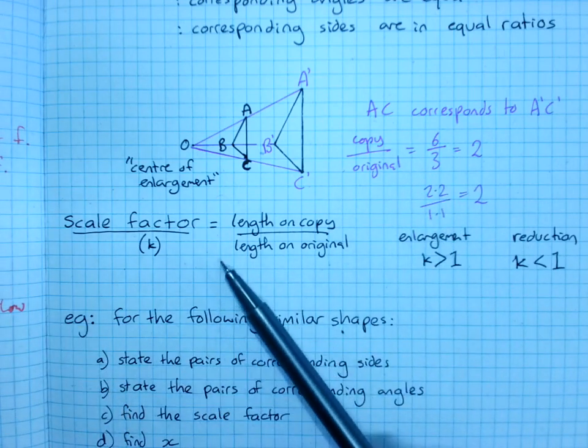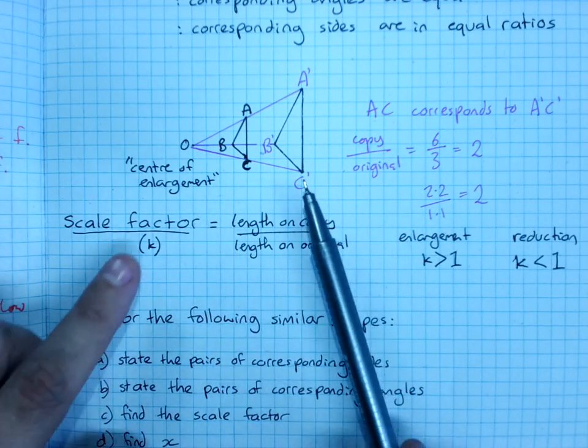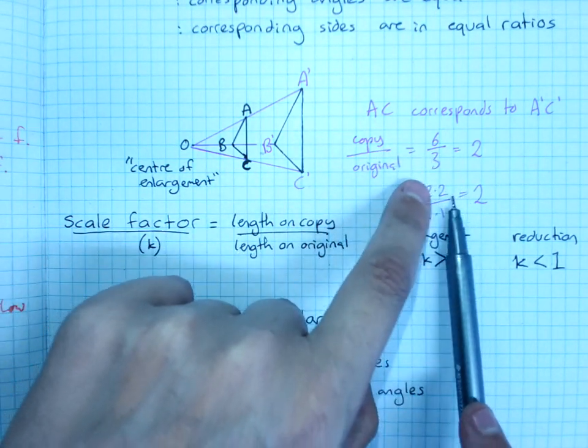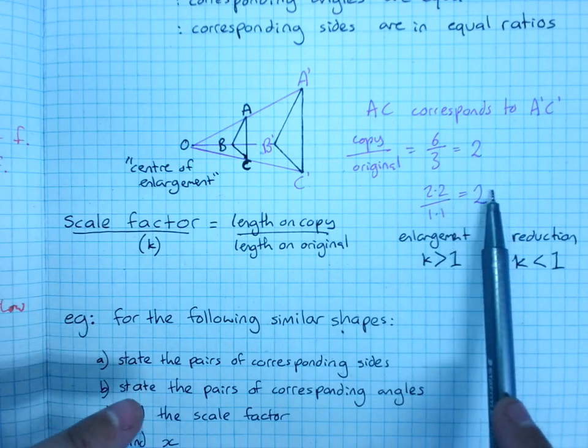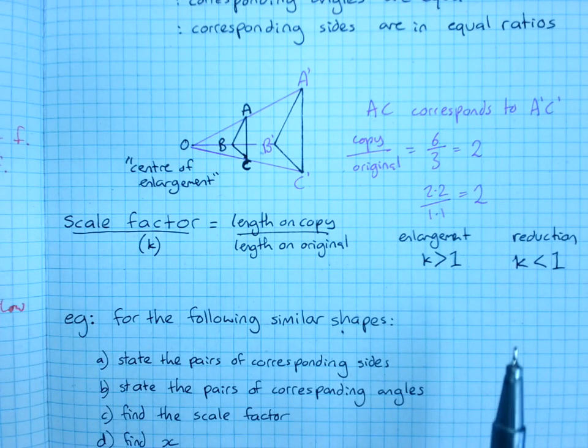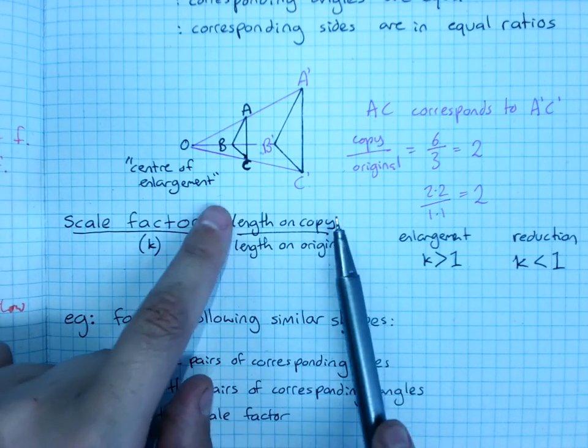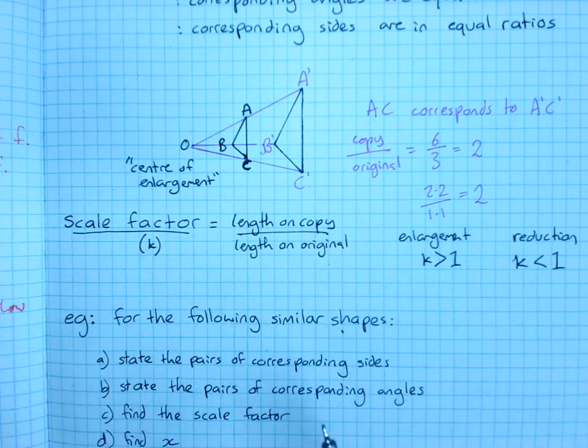If you want to check to prove that two shapes are similar, you must check that every single pair of corresponding sides divides out to give you the same scale factor. So that is the scale factor, the length on the copy divided by the length on the original.